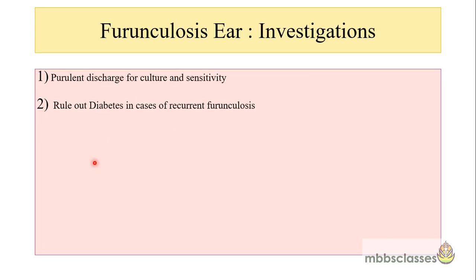The diagnosis of furunculosis of the ear is mainly clinical. Whenever we get a case of furuncle, we should send the pus for culture and sensitivity. If pus pointing is present, the purulent center or pus pocket can be opened with a small needle and the pus sent for culture and sensitivity. If a patient gives a history of recurrent furunculosis, we should rule out diabetes.